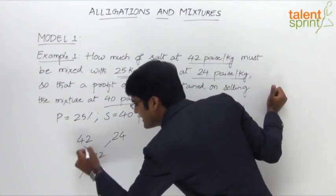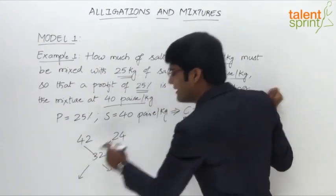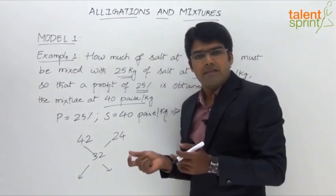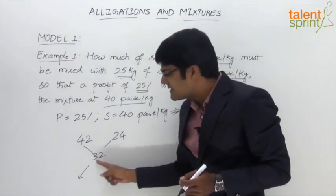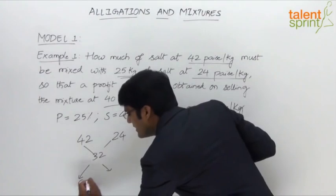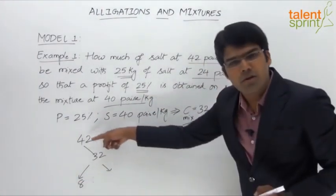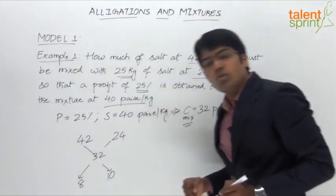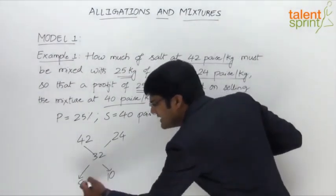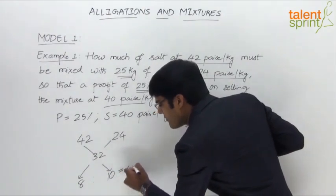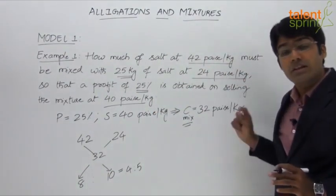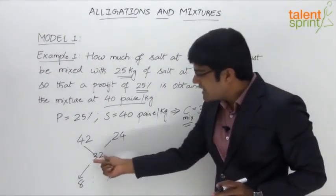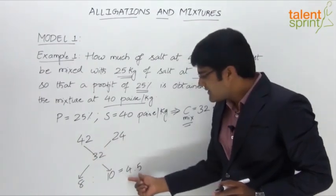Taking the cross differences — always take positive differences, never negative. The difference between 24 and 32 is 8, and the difference between 42 and 32 is 10. So the ratio in which the two qualities must be mixed is 8 to 10, which simplifies to 4 to 5. This is the ratio in which the two qualities of salt must be mixed to obtain the given mixture.